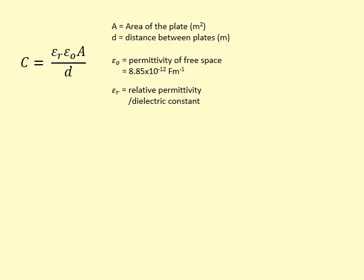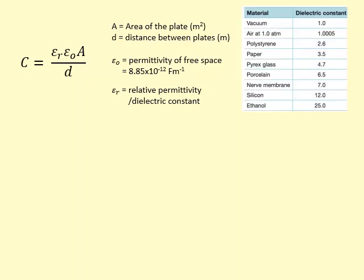In the equation, A is the area of the plate, d is the distance between the plates, ε₀ is the permittivity of free space, and εᵣ is the relative permittivity, sometimes called the dielectric constant. εᵣ has no units. For example, a vacuum or air is basically one, and ethanol is a very good dielectric, meaning it can increase the charge stored on the plates.